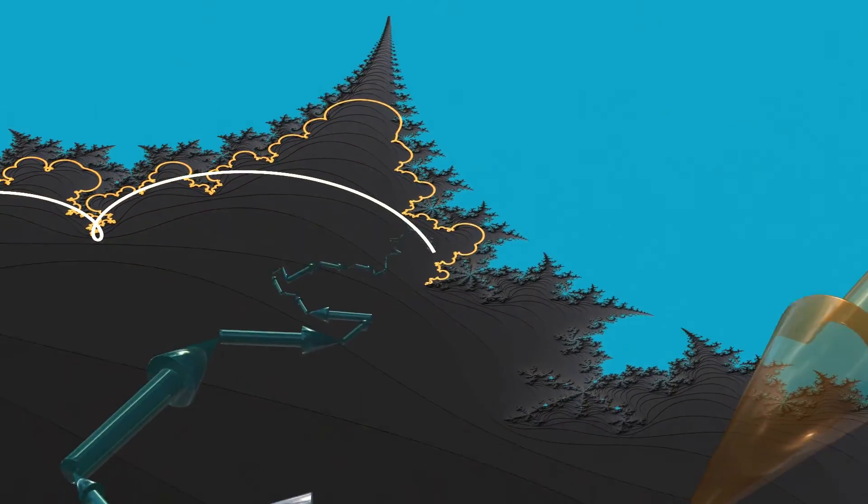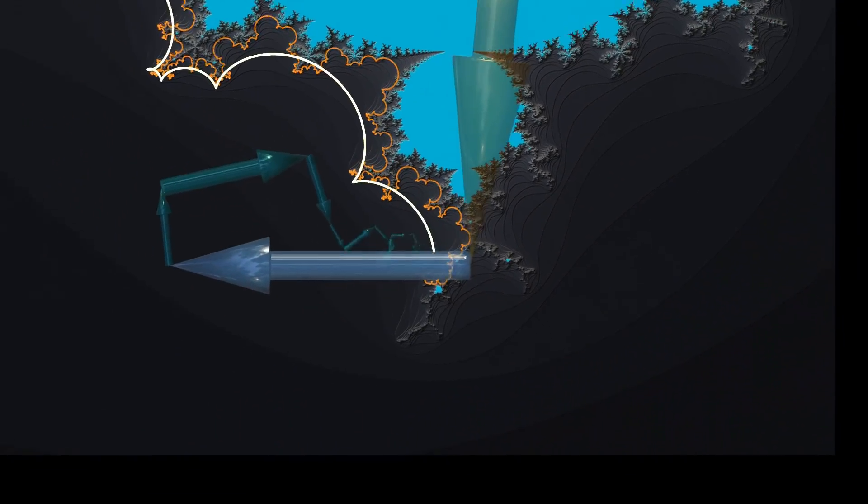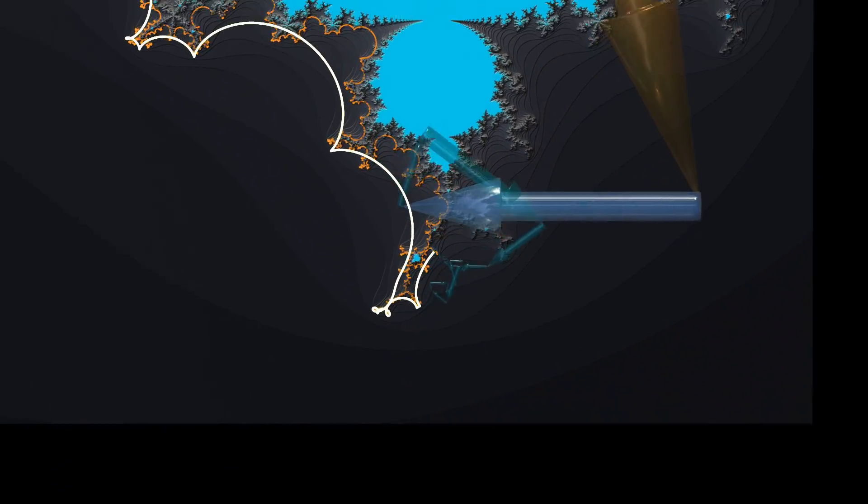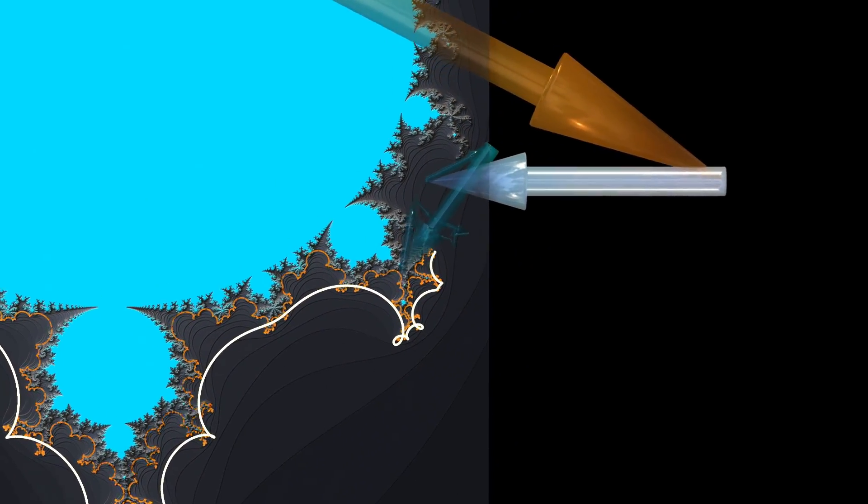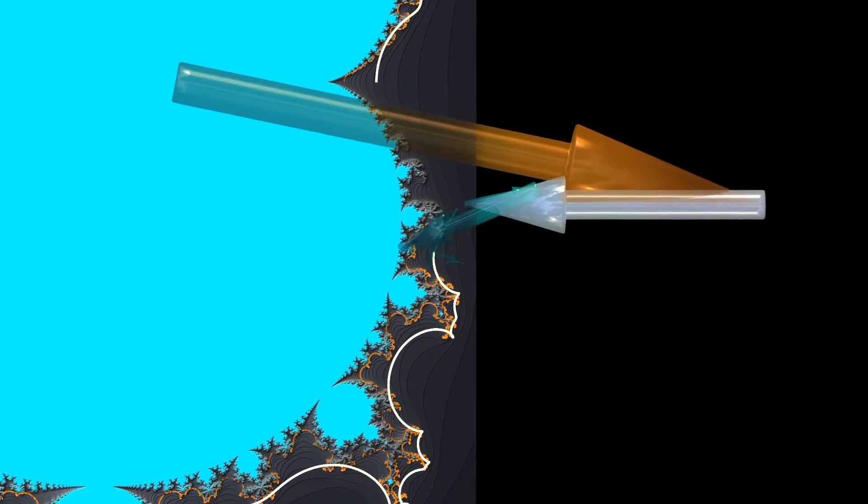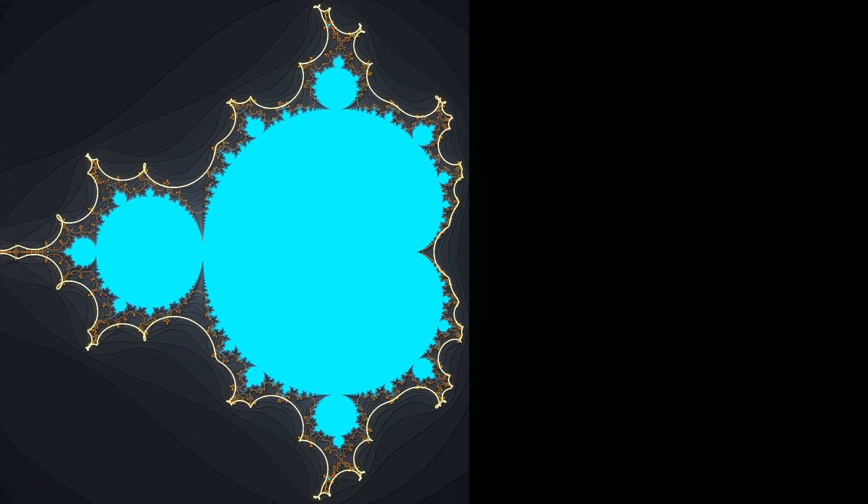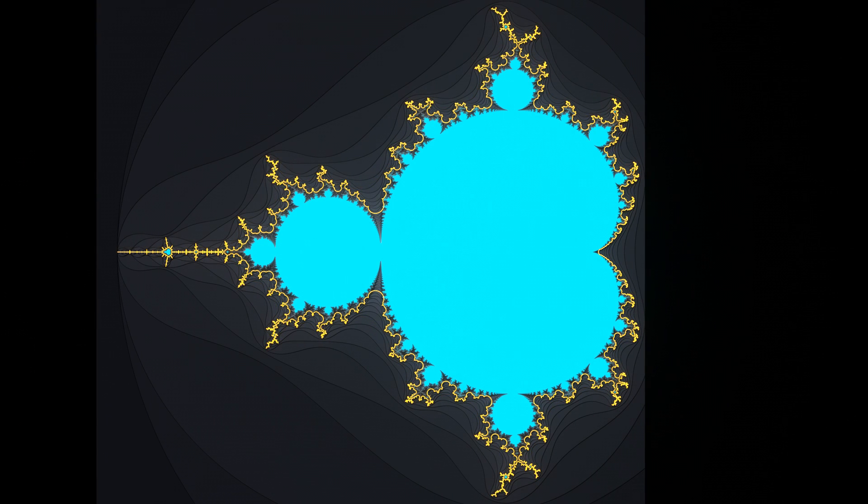There is a nice recursion relation that shortcuts the computation of these coefficients. References for these are provided in the video description. Not only do these coefficients allow us to trace out the shape of the boundary for the Mandelbrot set, but they also open the door to computing its area. However, going through this door has to wait for another time.